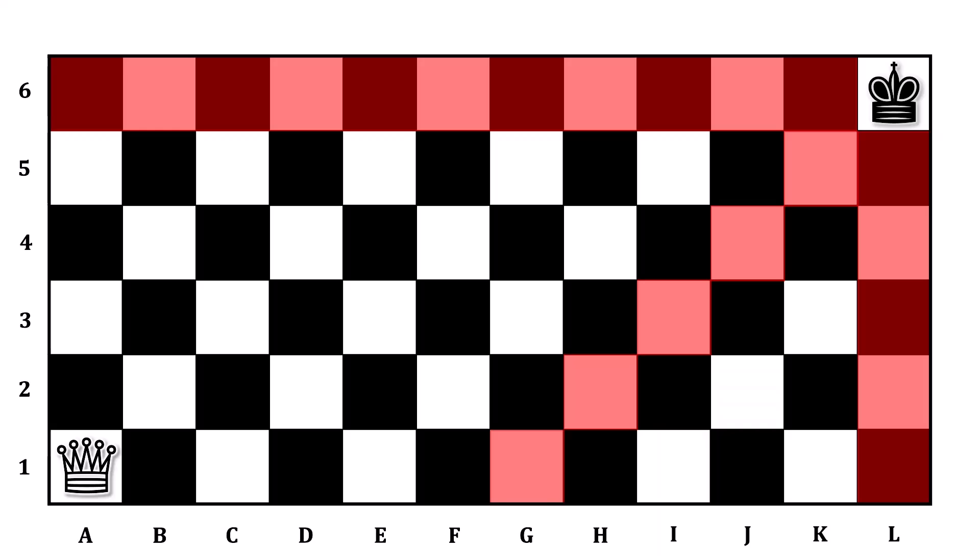The reason that backward induction is so useful is that knowing where these no-go zones are informs us of which squares we do want to land in. Specifically, think about square J5 and K4. If you land on those squares at the end of your turn, you are going to guarantee yourself the victory. Why is that?